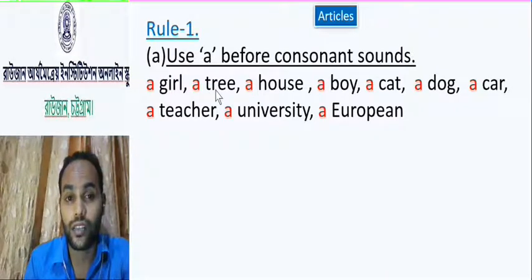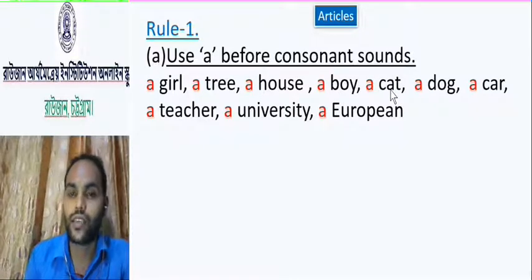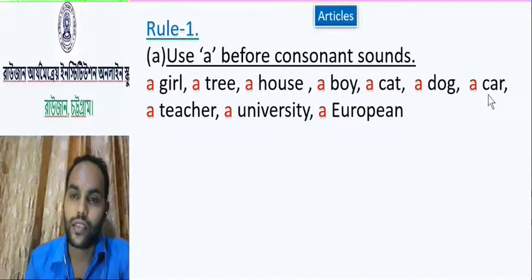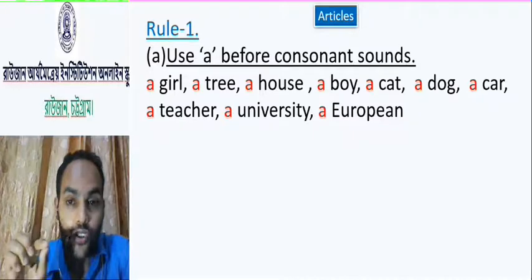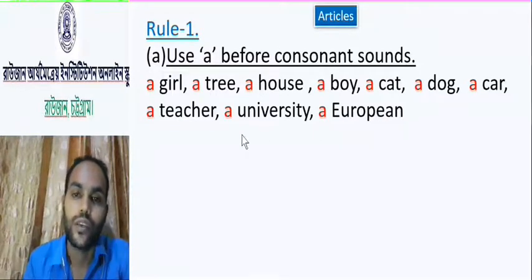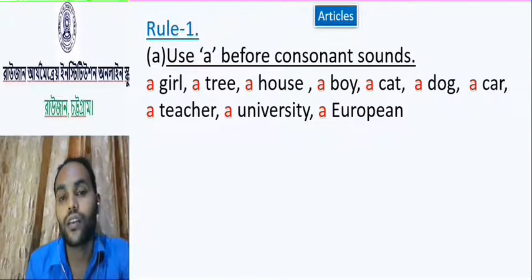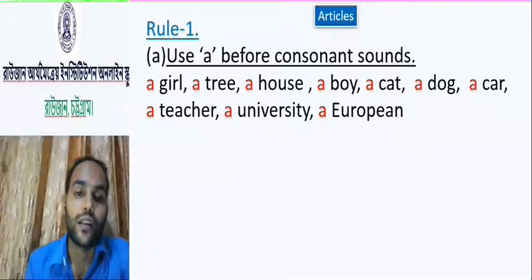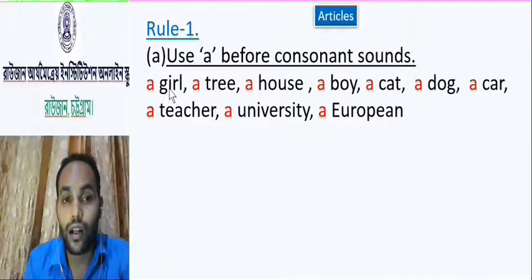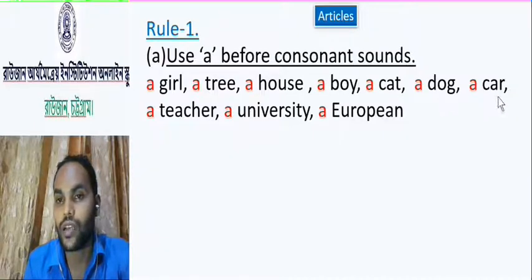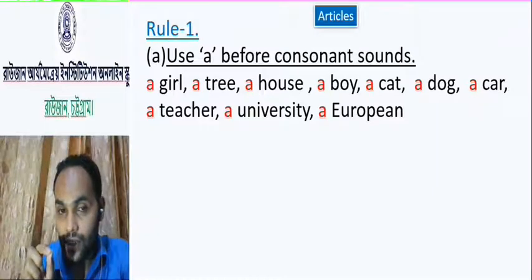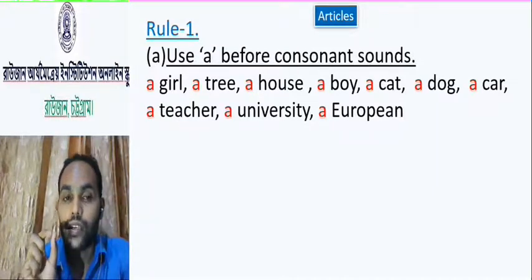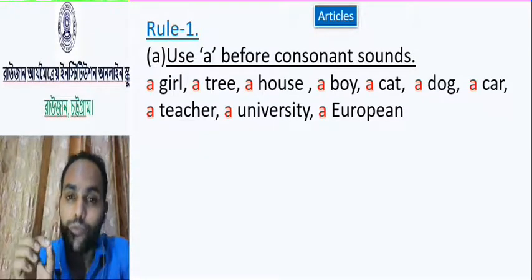Look at these words. 'Girl' starts with a 'g' sound; 'tree' starts with a 'th' sound; 'house' starts with an 'h' sound; 'boy' starts with a 'b' sound; 'cat' starts with a 'k' sound; 'dog' starts with a 'd' sound; 'teacher' starts with a 'th' sound; 'university' starts with a 'y' sound — not a 'u' sound — a 'yaw' sound; 'European' similarly. So all these sounds are consonant sounds, and you have to put 'a'. A girl, a tree, a horse, a boy, a cat, a dog, a teacher, a university, a European. Remember: when a noun word gives us a consonant sound, we will put 'a'.